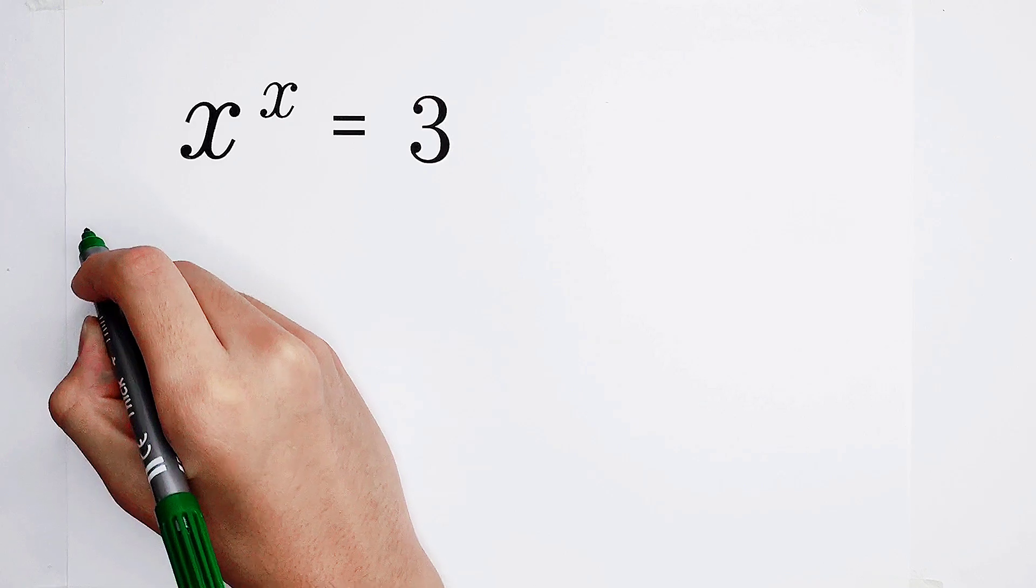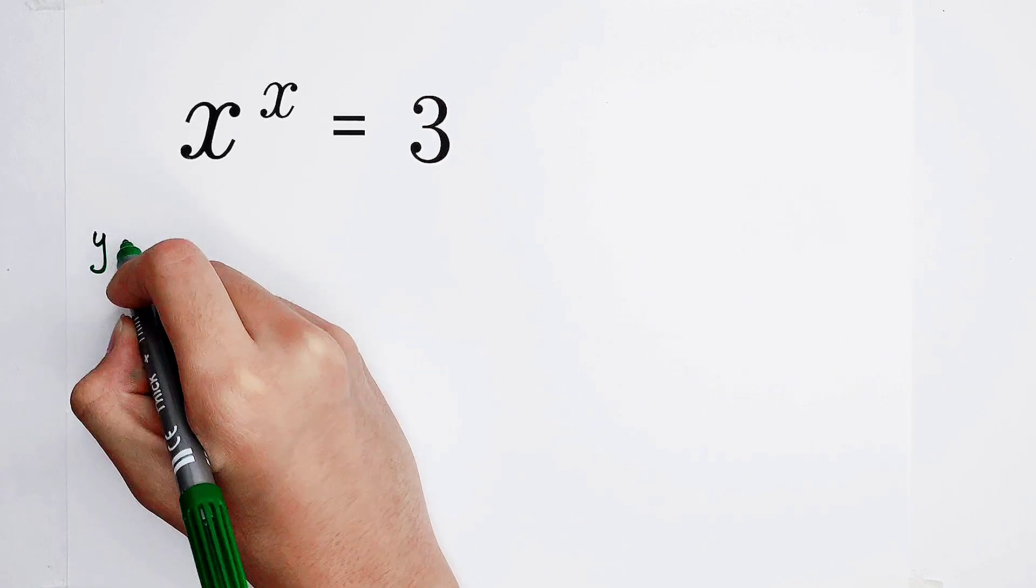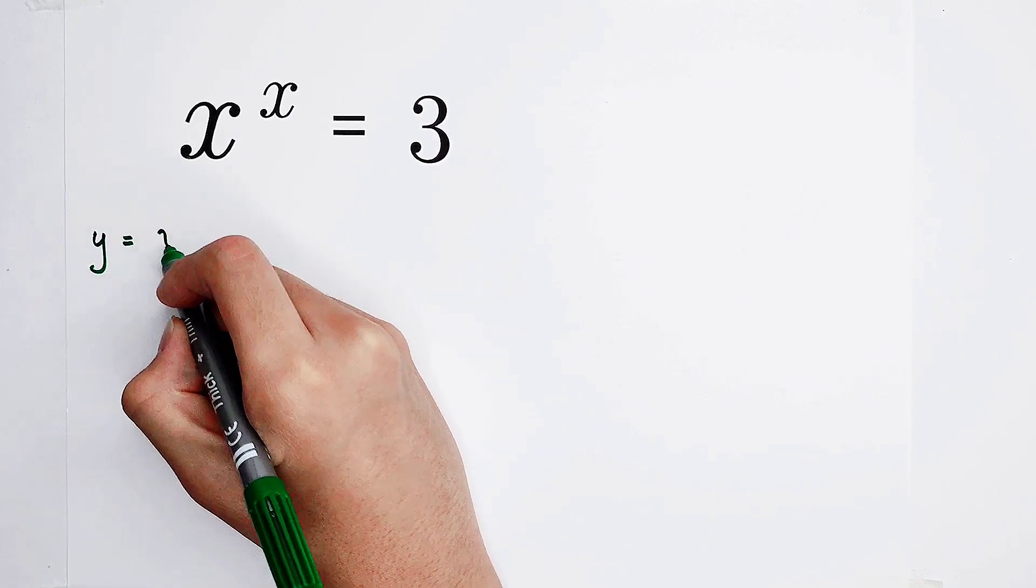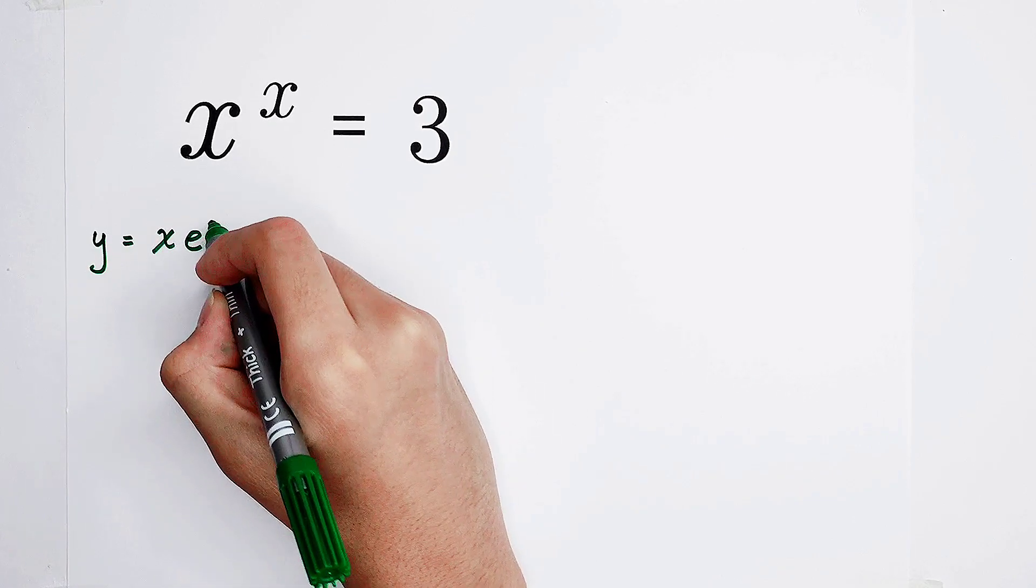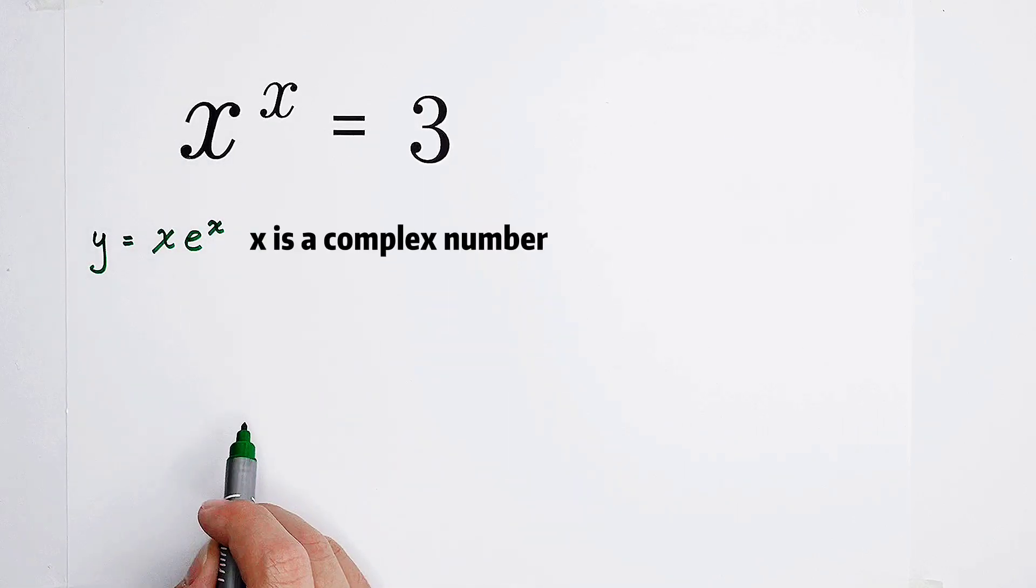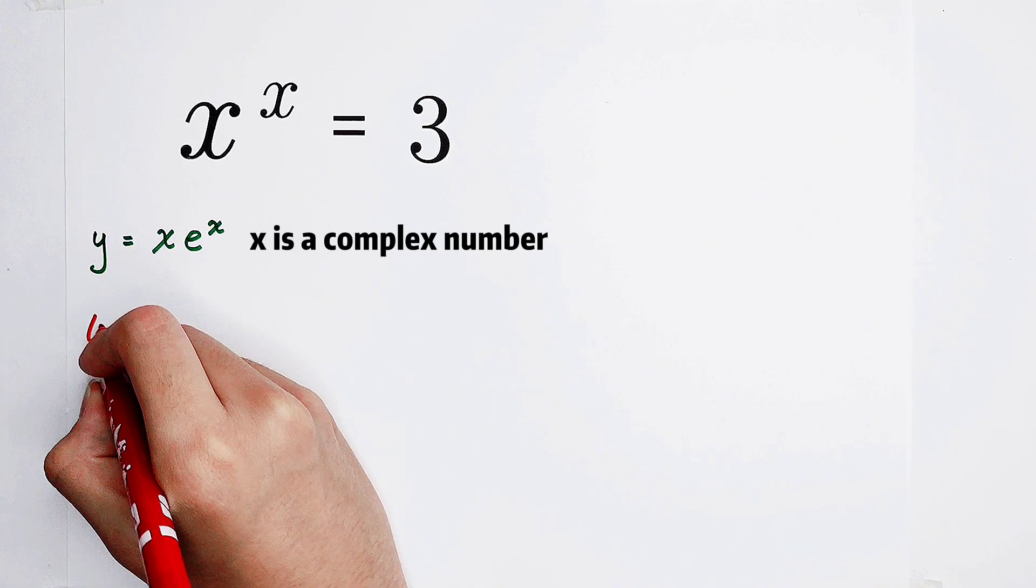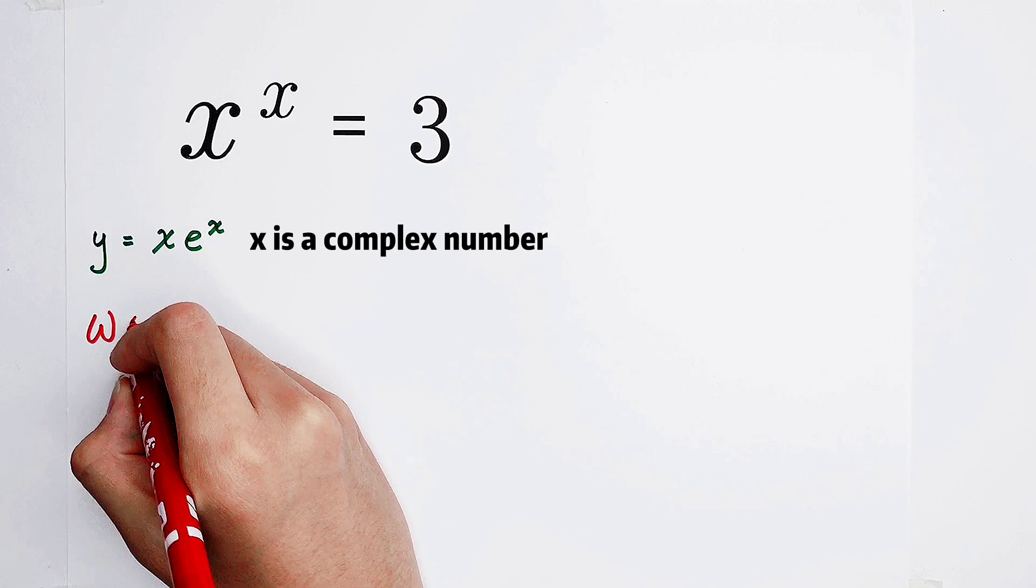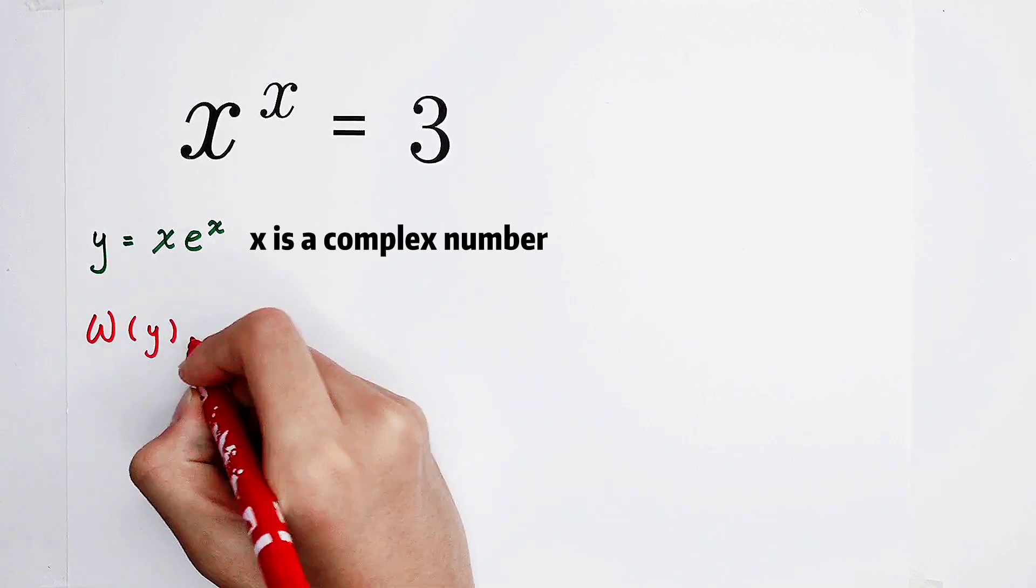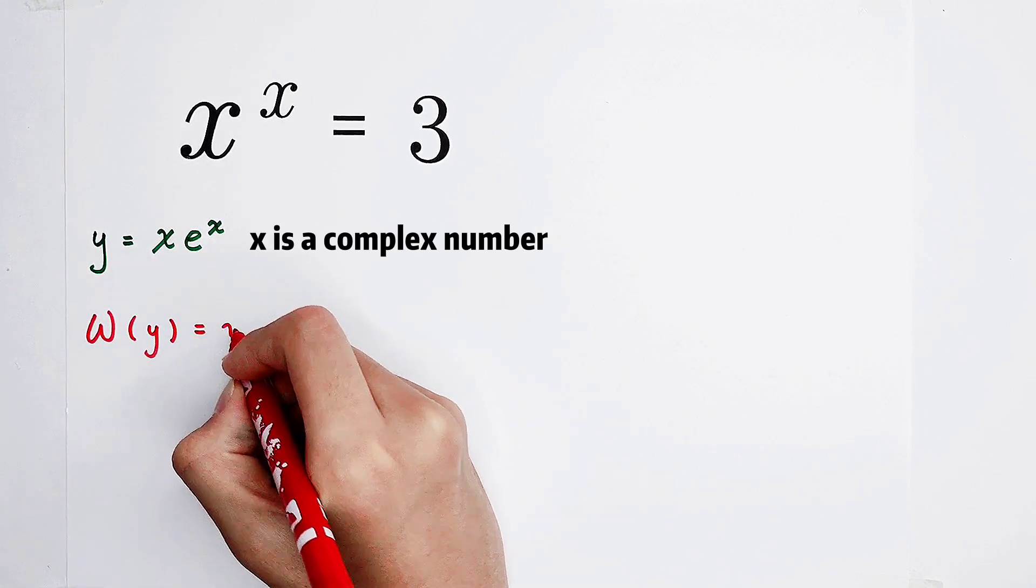It looks very nice. The function y equals x times e to the power of x. And the inverse of this function, W of y, is going to be equal to x.